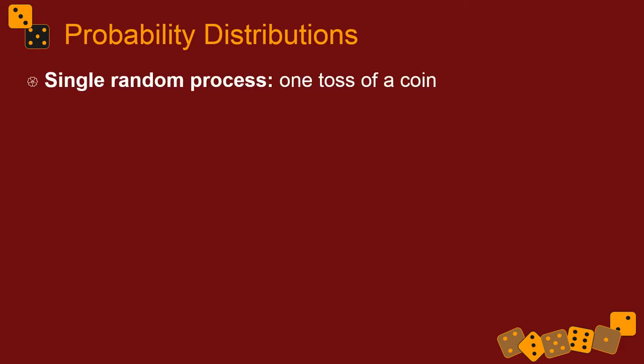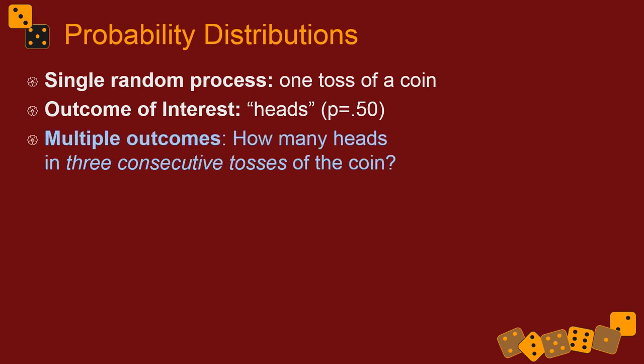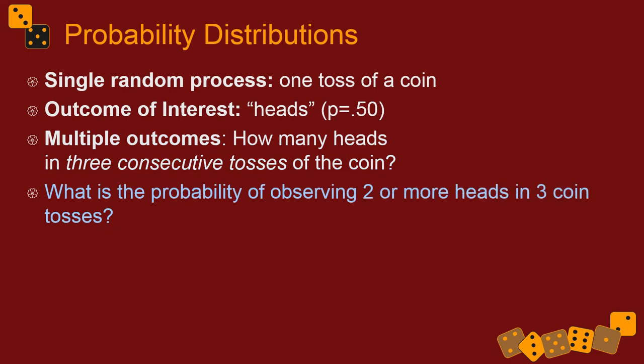Getting back to simplistic stuff: a single random process is one toss of a coin, and the outcome of interest is heads — 50% probability on any toss. Looking at multiple outcomes, how many heads would we expect in three consecutive tosses of a coin? We might ask what's the probability of observing two or more heads in three coin tosses. Let's work this one out — this is where we dive into probability distributions. This particular type of distribution is called a binomial, meaning two numbers.